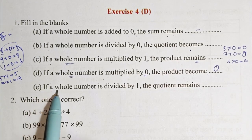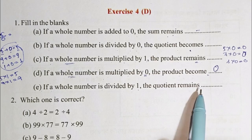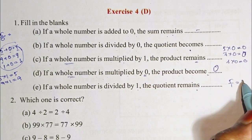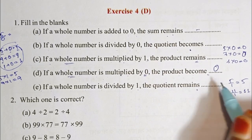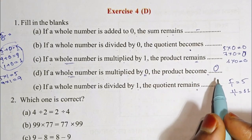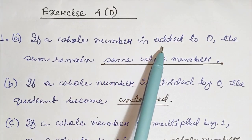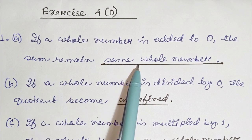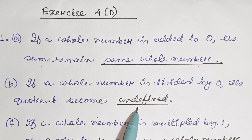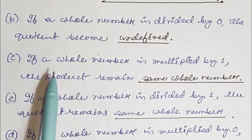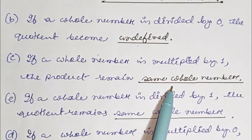If a whole number is divided by 1, the quotient remains the same whole number. For example, 5 divided by 1 is 5. If the whole number is divided by 0, the answer becomes undefined. If the whole number is multiplied by 1, the product remains the same whole number.